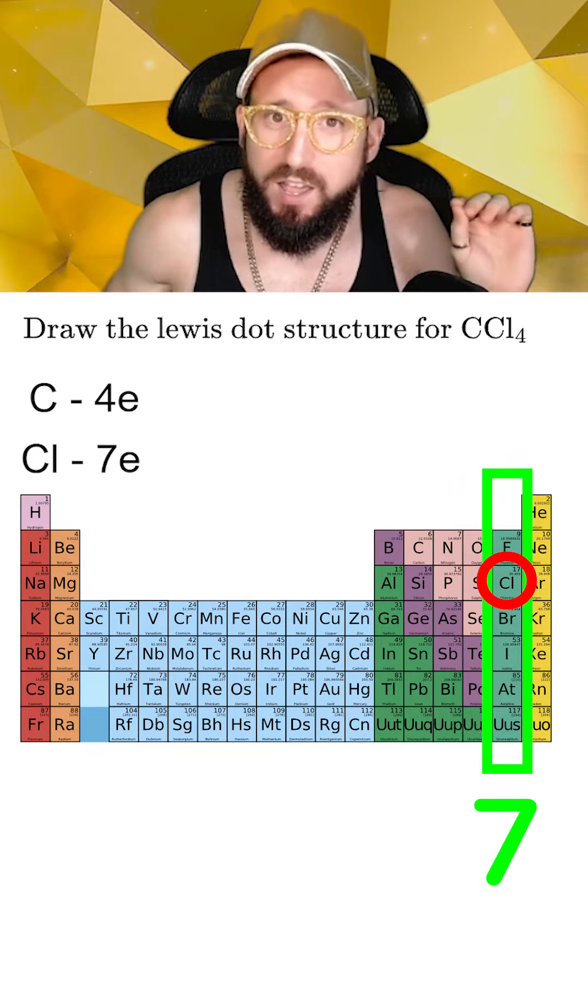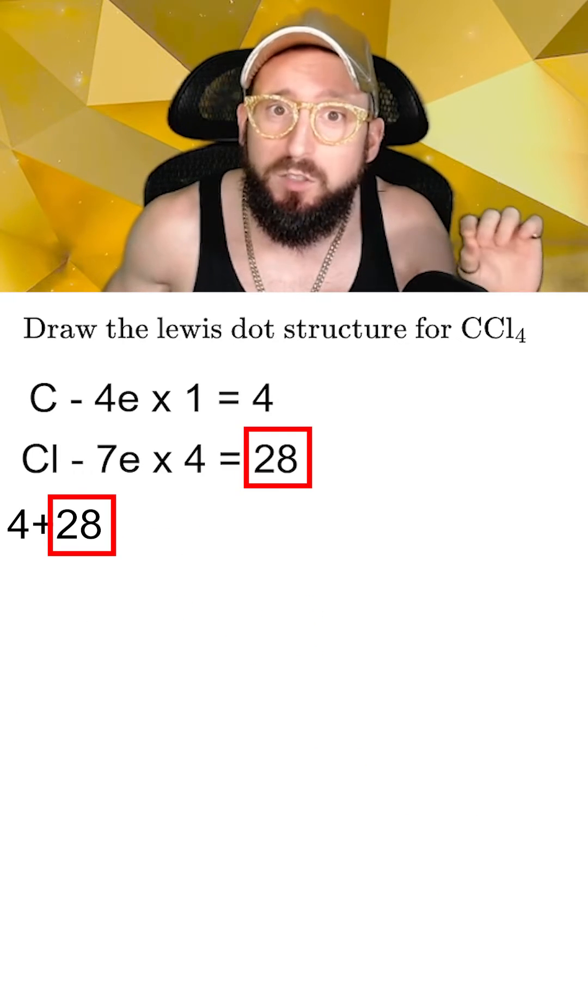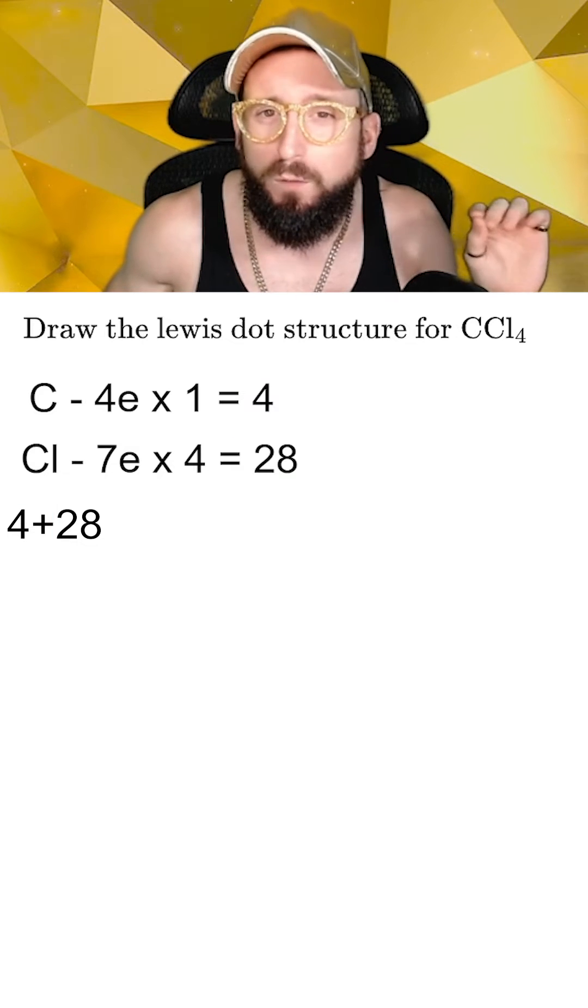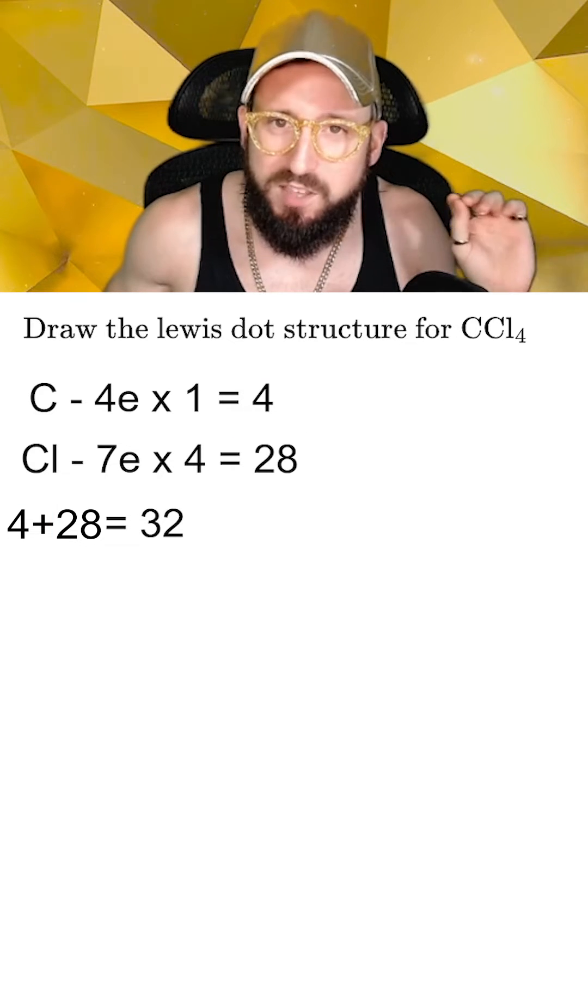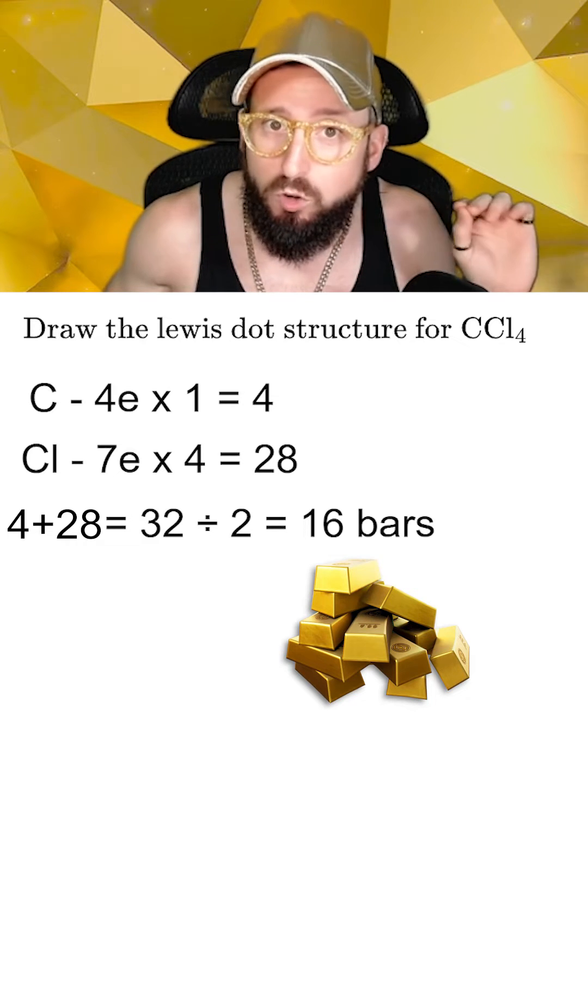In this case, carbon has four valence electrons, and chlorine has seven. Since there are four chlorines, this gives us 28, which we add to the four from the single carbon to get a total of 32 valence electrons. Now we're going to take this total and divide it by two to give us 16 bars that we can use to draw our Lewis diagram.